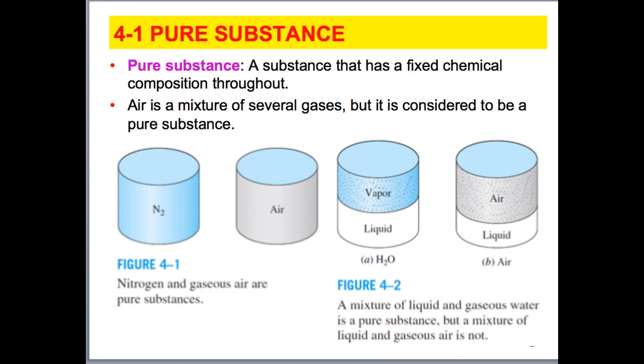A good example is nitrogen. Nitrogen is uniform throughout, so we consider that as a pure substance. But what about air? Air is a mixture of both nitrogen and oxygen, about 79% nitrogen, 21% oxygen. And we can measure that either by mass or by volume, and those values stay approximately the same.